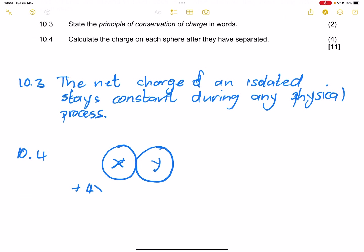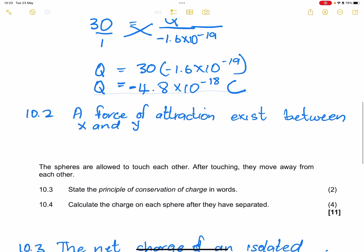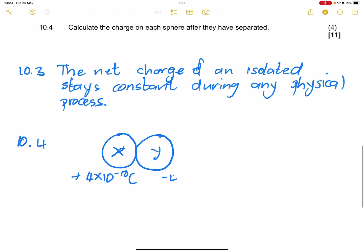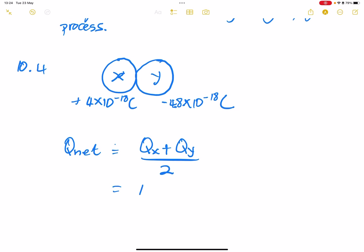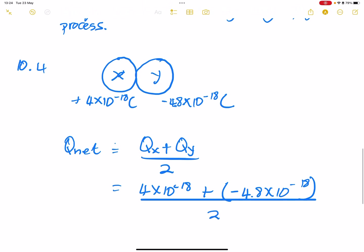So we know that X has a positive charge, and we know Y. We just calculated the charge of Y, we said that's negative 4.8 times 10 to the minus 18. So what will be the charge after we separate them? It means that we'll just simply say the net charge will be the charge of X plus the charge of Y divided by 2. And so that will be 4 times 10 negative 18 plus, note that Y is negative, so you need to put that sign there, negative 4.8 times 10 to the negative 18, divided by 2.